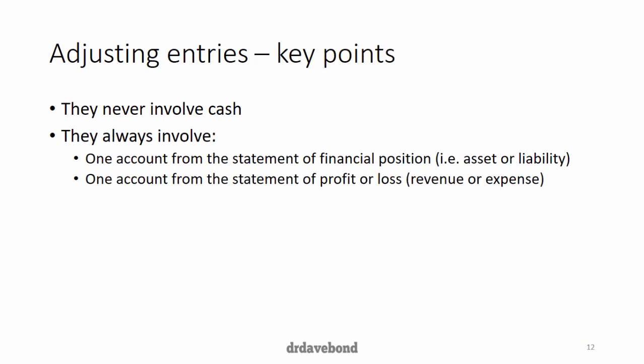A couple of key points before the comprehensive example: adjusting entries never involve cash. If you find yourself thinking about using cash as a debit or credit in this situation, just don't — if there was a cash movement, there would be a normal journal entry taking place. They will always involve one account from the statement of financial position — an asset or a liability — and one account from the statement of profit or loss — revenues or expenses.